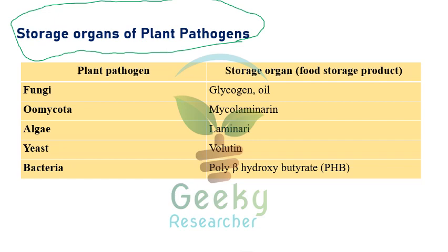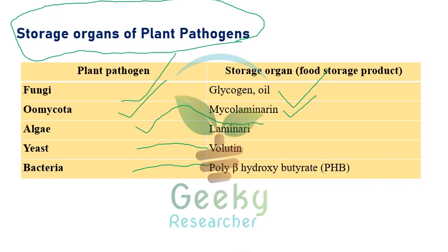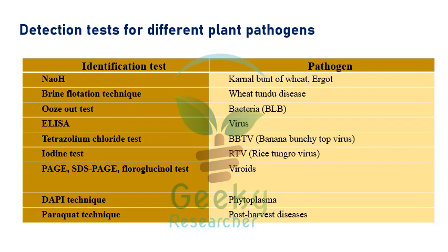Storage organs of plant pathogens: Fungi store energy as glycogen or oil. Oomycota uses mycolaminarín. Algae use laminarin. Yeast uses volutin. Bacteria store food as poly-beta-hydroxybutyrate, otherwise called PHB — very important. This question has appeared in many exams. Remember: fungi — glycogen/oil; oomycota — mycolaminarin; algae — laminarin; yeast — volutin; bacteria — PHB.